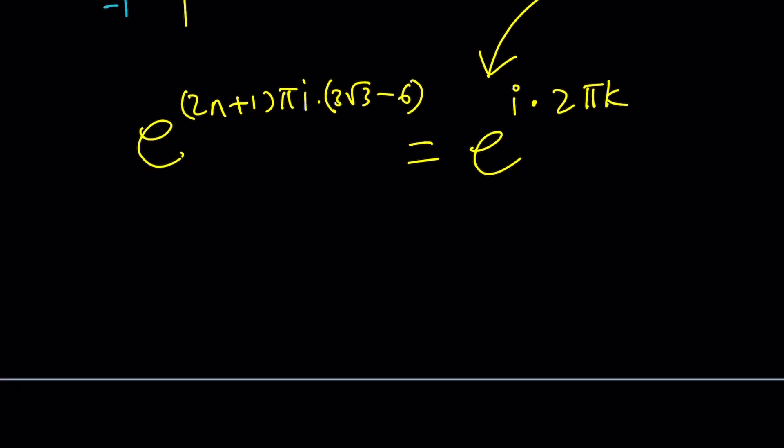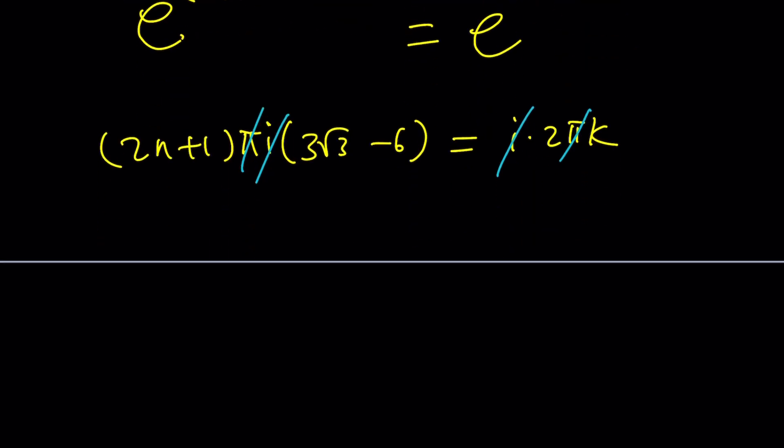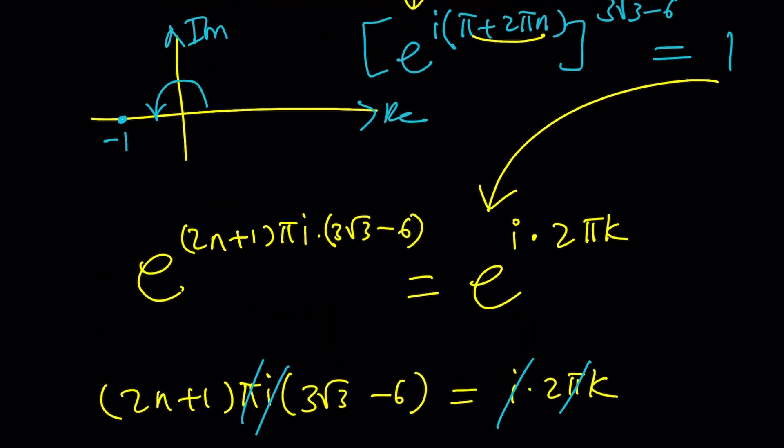Great. We have e's on both sides. Let's get rid of them by natural logging. And this is going to give us 2n plus 1 pi i multiply by 3 root 3 minus 6 equals i times 2 pi k. And guess what? A lot of good things are going to cancel out such as pi i and i pi. Awesome. And this is going to give us a pretty interesting scenario because from here, what are we supposed to solve for, by the way? We're supposed to solve for x.